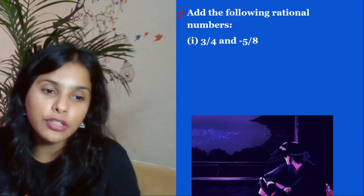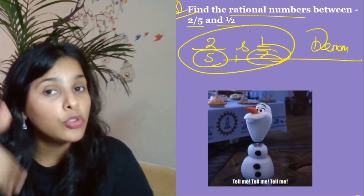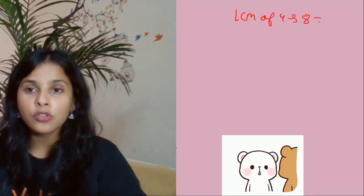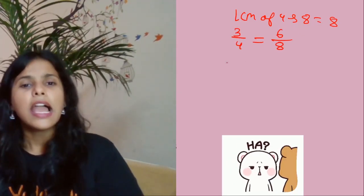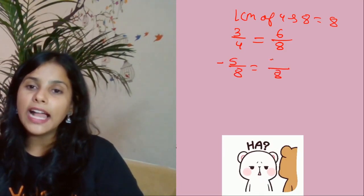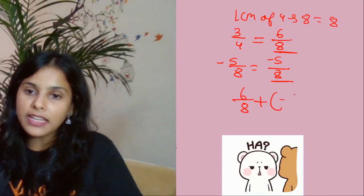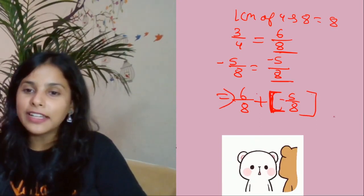Next part: add the following rational numbers. Remember — whenever you add or subtract rational numbers, always make the denominators equal. The denominators are 4 and 8 respectively. LCM of 4 and 8 is 8. Rewriting 3/4 with denominator 8 gives 6/8. The next number -5/8 already has denominator 8, so it stays as is. Now add: 6/8 + (-5/8) = 1/8 is the answer.